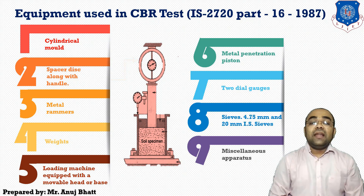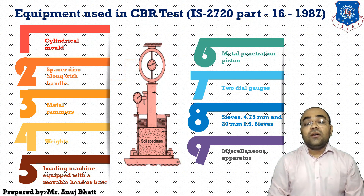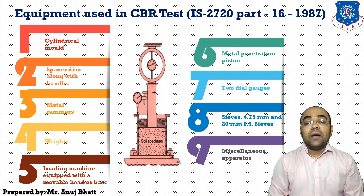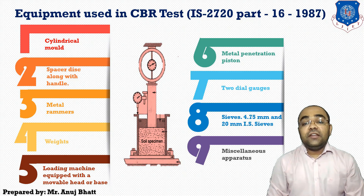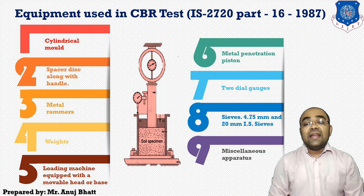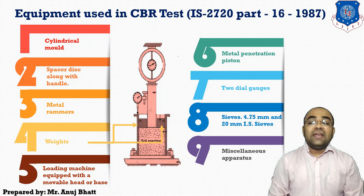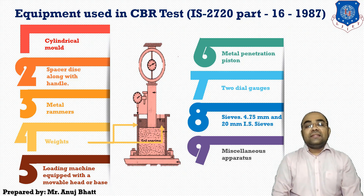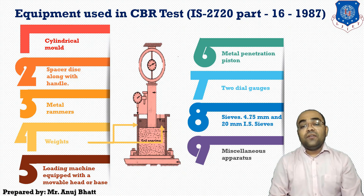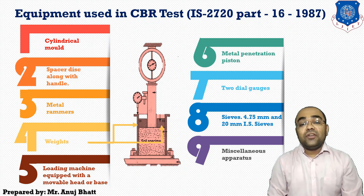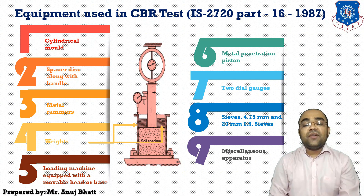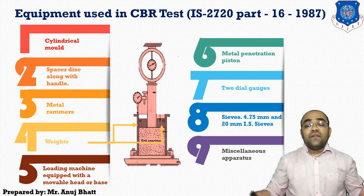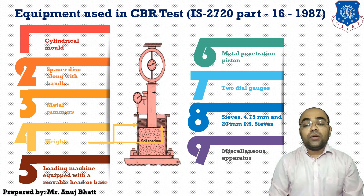The next equipment is the metal hammer, which may have a weight of 2.6 kg with a drop of 310 mm, or a weight of 4.89 kg. The fourth item is weights — annular metal weights and several slotted weights each weighing 2.5 kg are placed in the cylindrical mold to provide support to the specimen.